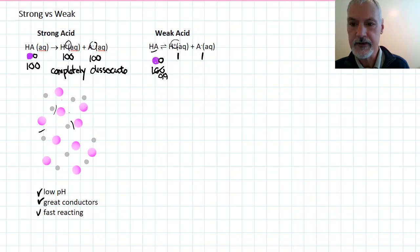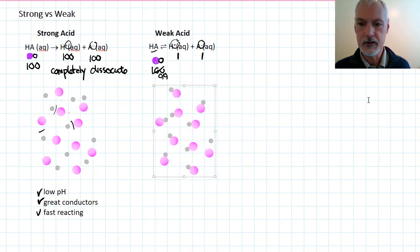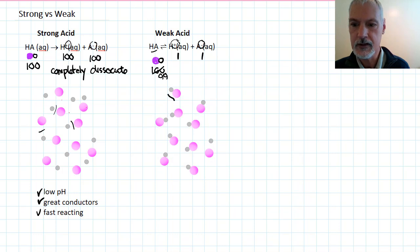This then results in the presence of very few ions. So, diagrammatically, it would perhaps look like this, with most of my HA molecules still intact, and only one that dissociated or broke apart.